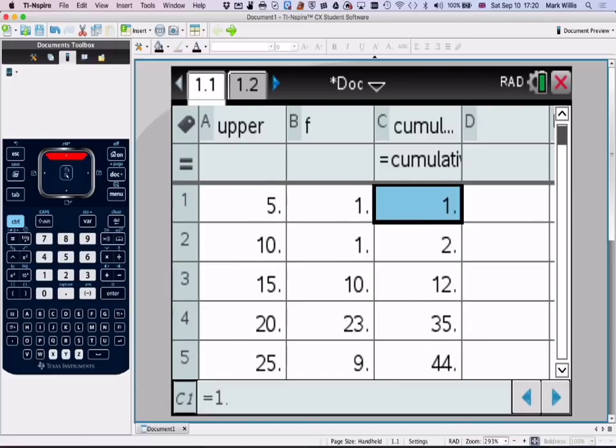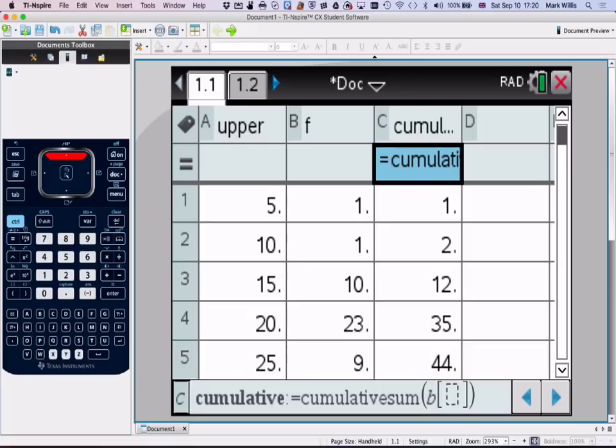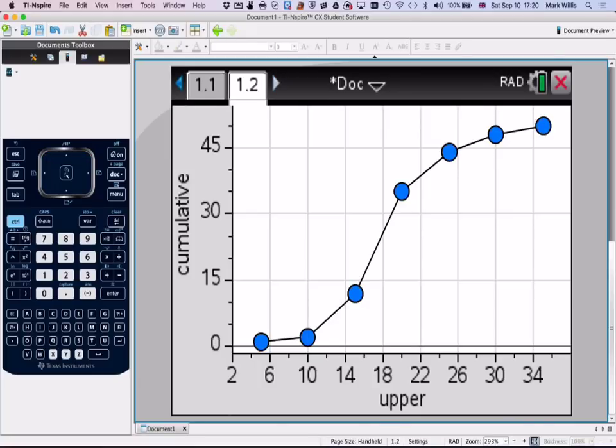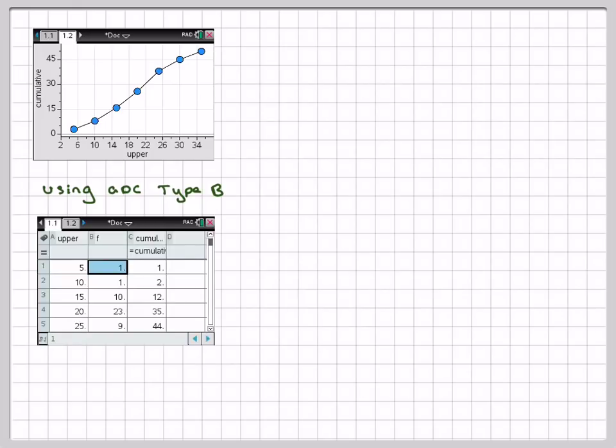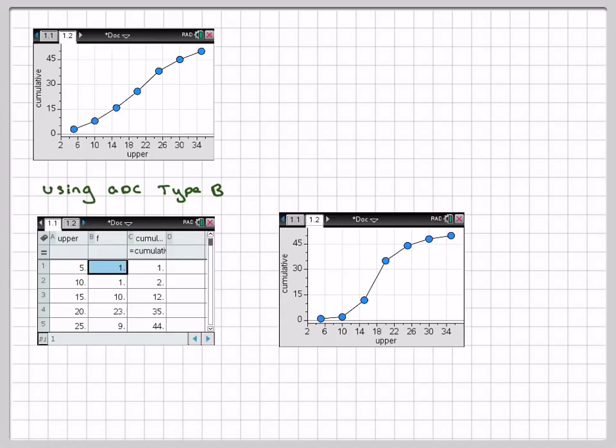And then if we click over here on our graph, you will see that the graph has changed as well. But it's not really much you can do with the graph. It might look good in a project. And then the screenshots for that are here and here. So this has been a video to show you how to plot a cumulative frequency curve, find the median, and then also get the GDC to find the cumulative frequency values and draw the curve on the calculator. Thank you.